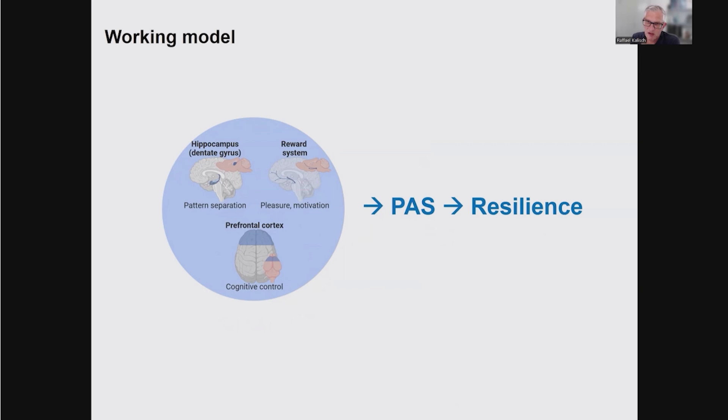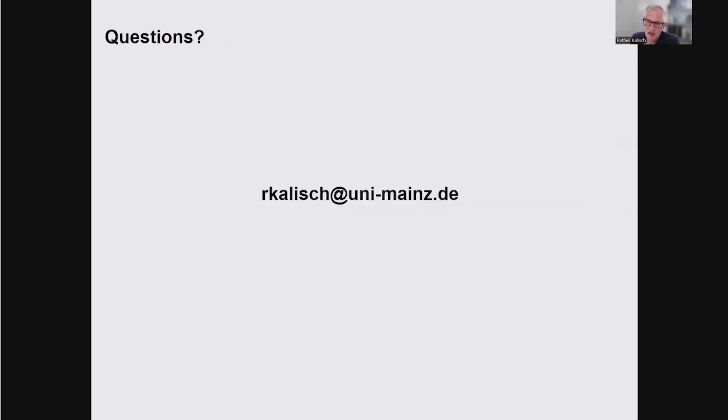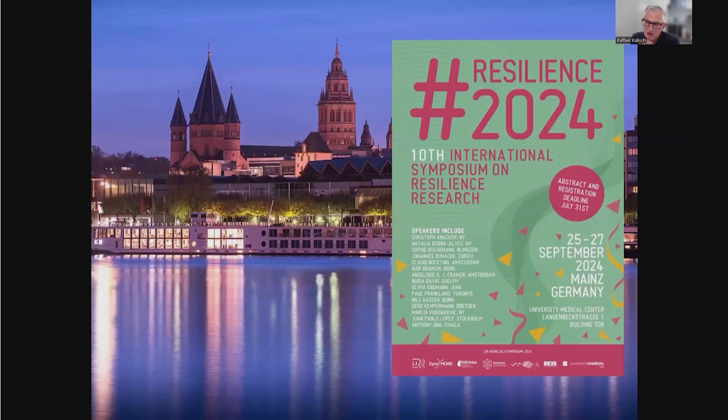So that is the reason why we came up with this working model. Our idea is that the function of these systems is protective because they shape your appraisal style towards the positive. They allow you to detect safety, to detect reward, to do positive cognitive reappraisal with your cognitive control functions, and to produce optimized stress reactions that help you manage difficult situations but do not overshoot. This is why they make you more resilient. Well, that's the working model, very preliminary. Thank you a lot for your attention. If you have any questions, please write me an email. The last thing is that I would like to invite you to this meeting in Mainz in Germany, end of September. This is the 10th anniversary with a wonderful panel of speakers discussing questions of resilience. Please come to Mainz end of September. Thank you very much and goodbye.